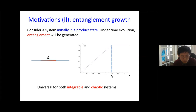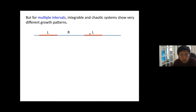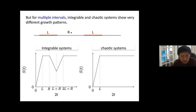When region A consists of a single connected region, entanglement grows linearly. But for multiple connected regions, for example a sub-region consisting of multiple intervals in one spatial dimension, integrable and chaotic systems show very different growth patterns. For a simple example: suppose sub-region A consists of two intervals of size l separated by distance r. In integrable systems you often see dips in the entanglement entropy — it initially grows linearly but can show such dips — whereas for chaotic systems you normally see monotonic growth.